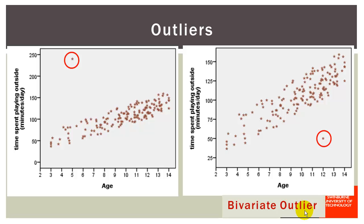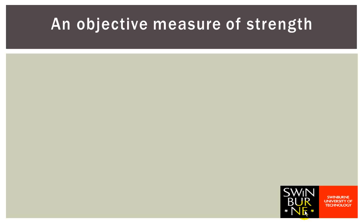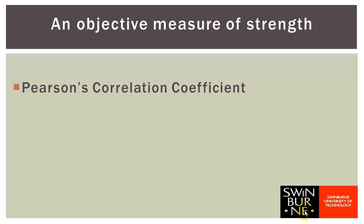So that's a brief introduction to scatter plots. In part two of the lecture we'll be having a look at Pearson's correlation coefficient, which is an objective measure of the strength of the relationship.